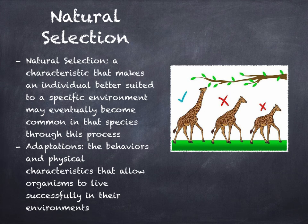If a species cannot adapt to changes in its environment, the entire species can disappear from Earth and become extinct.